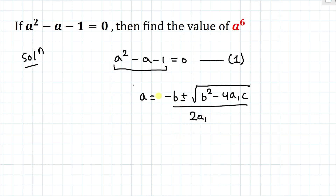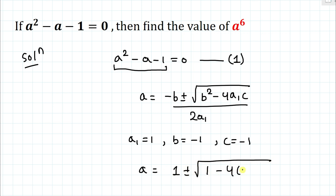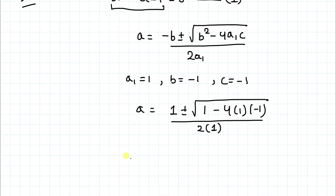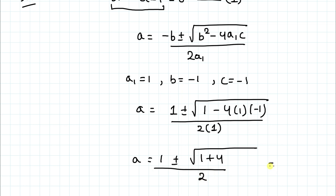Here a₁, b, and c are the coefficients of the quadratic equation. So a₁ = 1, b = -1, and c = -1. Substituting these values: a = (1 ± √(1 - 4×1×(-1))) / (2×1), which gives a = (1 ± √5) / 2.